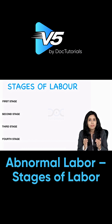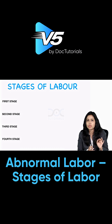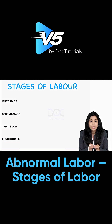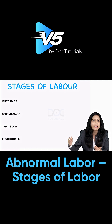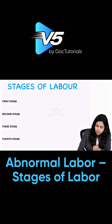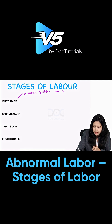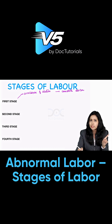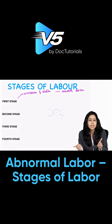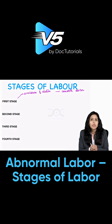In normal labor, it is basically divided into four stages. There is first, second, third, and the fourth stage. The first stage is basically when the cervical changes begin till the time of full cervical dilatation — from 1 centimeter then we reach till 10 centimeters. That is included in the first stage.